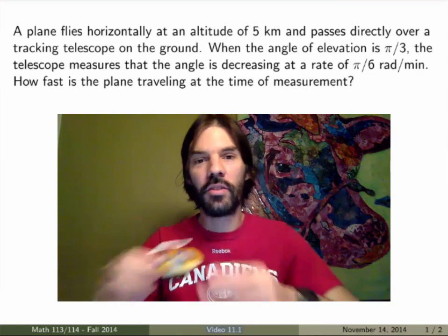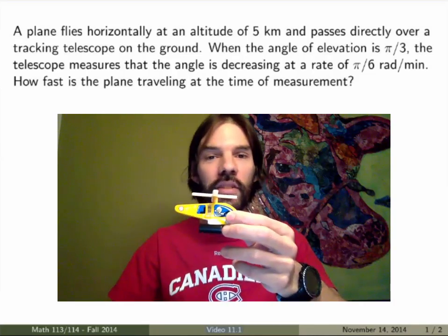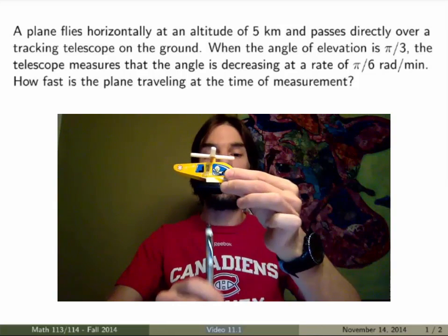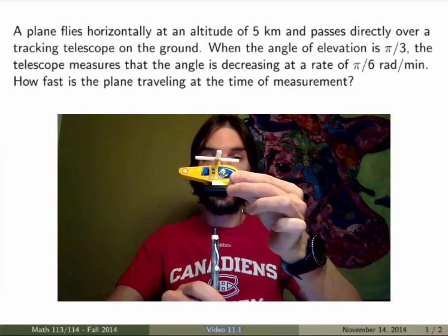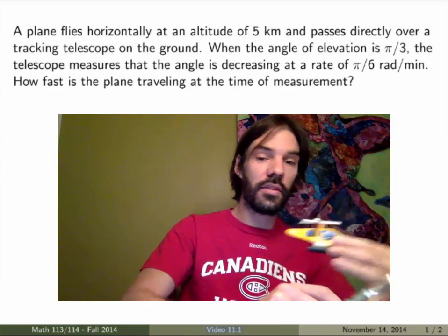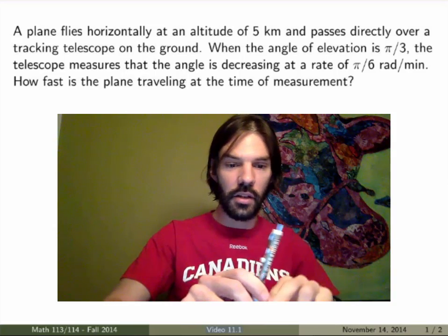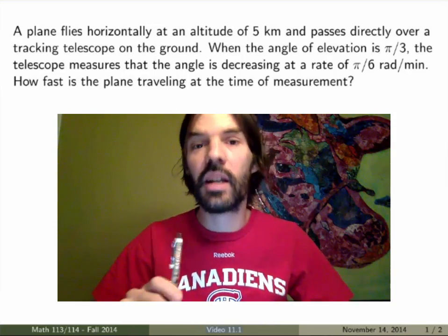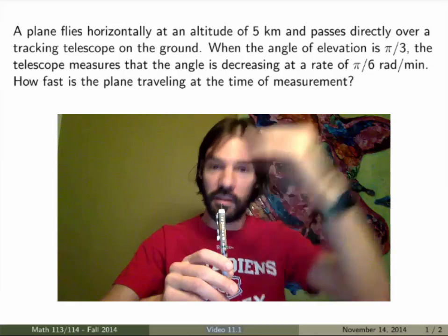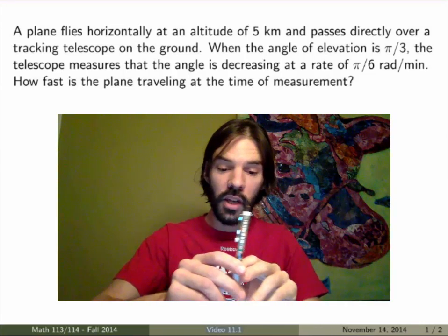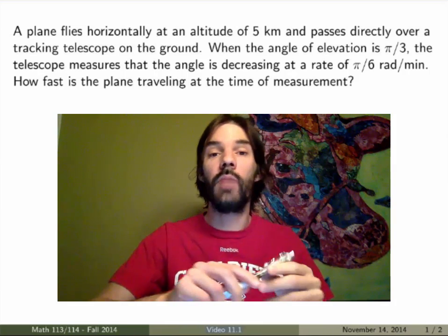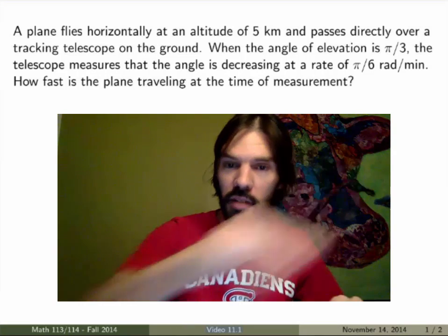Let me do a little demonstration. Here's my plane — it's not really a plane but it kind of looks like one — and this is my tracking telescope. The plane is flying horizontally, and at some point it goes straight up above the telescope. As the plane moves away, the angle of elevation of the telescope decreases. What the telescope measures is not the velocity of the plane itself, but the rate of change of the angle of elevation. So you want to use this knowledge of the rate of change of the angle to deduce the horizontal velocity of the plane.